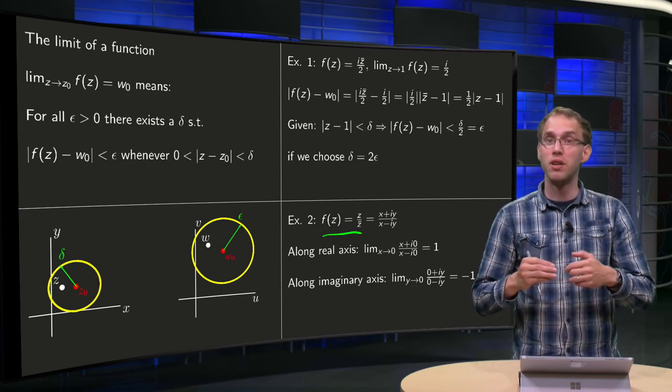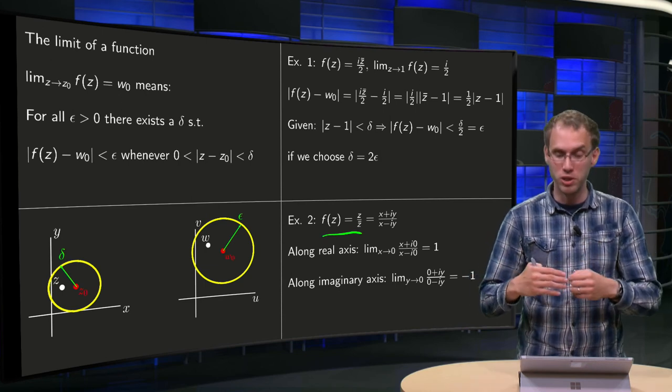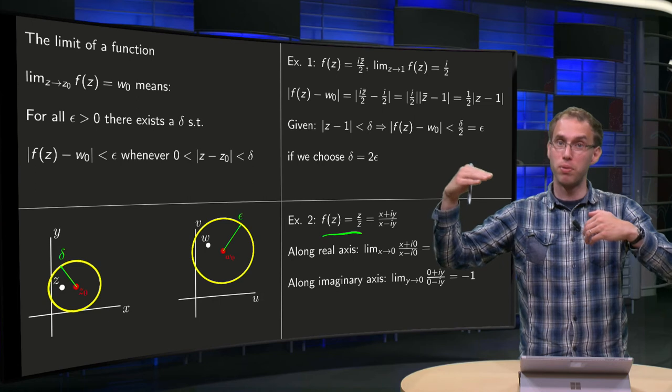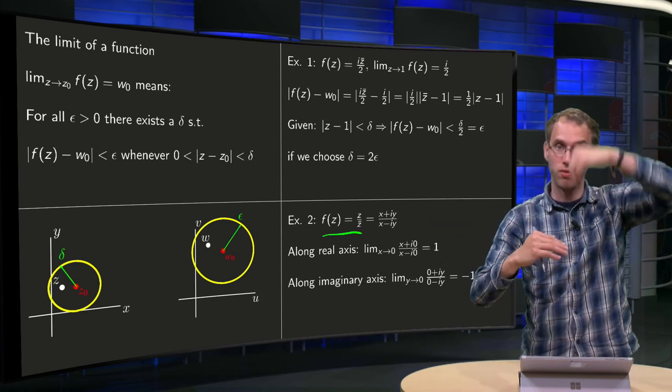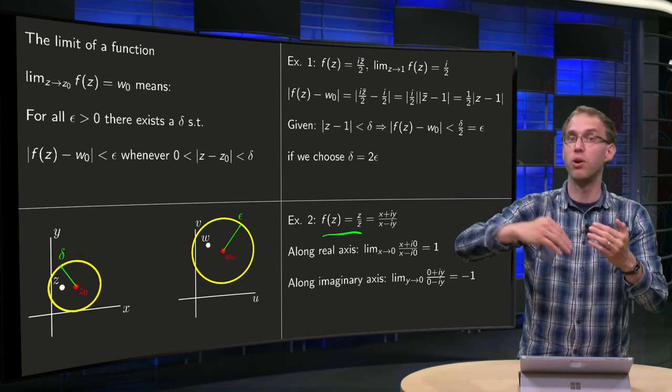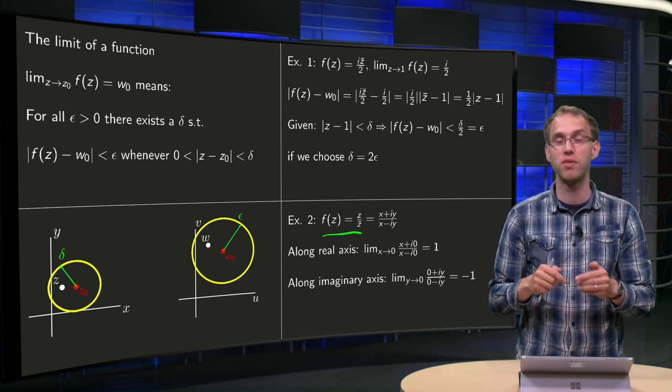Well, limits only exist if you get the same limit no matter how you approach, in this case, 0. So you should get the same number if you approach 0 along the x-axis, or if you approach along the y-axis, or if you approach 0 along the line y = x, or if you approach 0 along the parabola y = x².